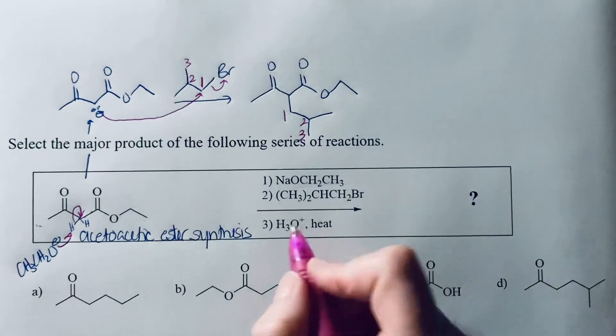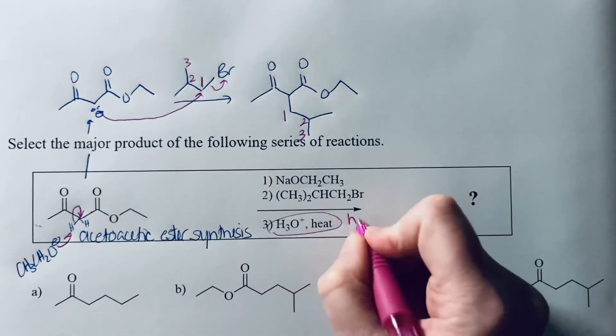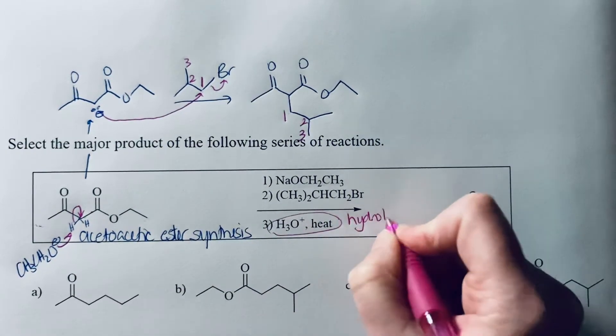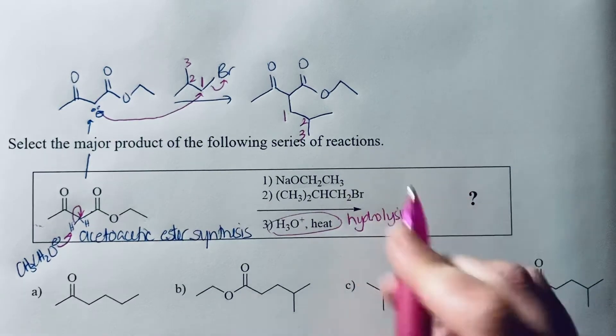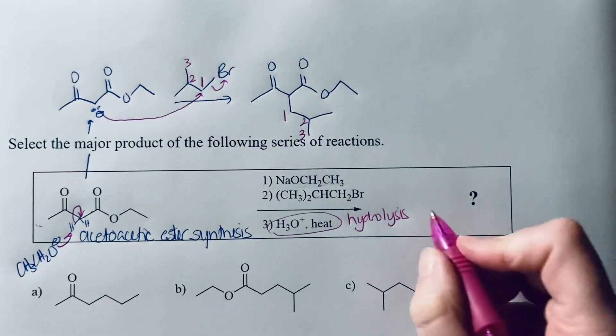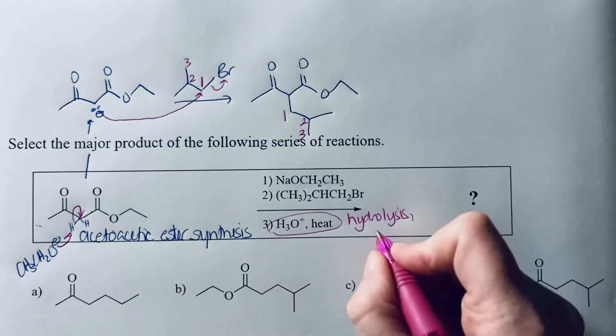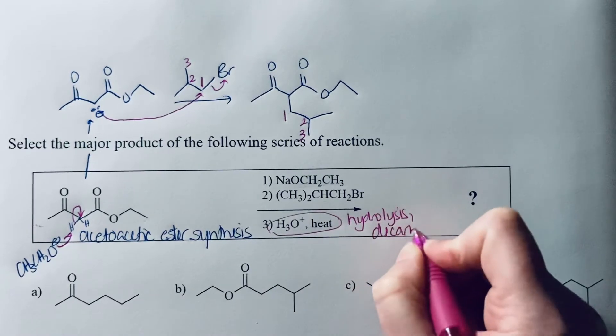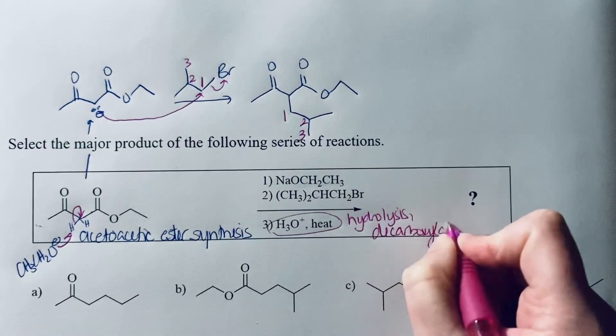And the next thing you're going to do here with the H3O plus and heat is you're going to do a hydrolysis. So you're going to hydrolyze that ester to the carboxylic acid. And if you keep heating this up, you're also going to decarboxylate or lose CO2.